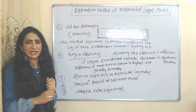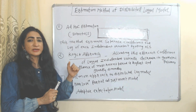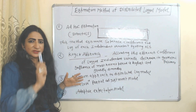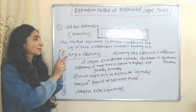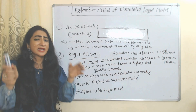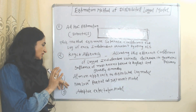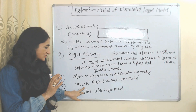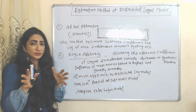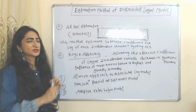Now we will see estimation methods for the distributed lag model. First is ad hoc estimation, which estimates separate coefficients for the lag of each independent variable using OLS. Next is the Koyck approach, which assumes the coefficients of the lags decrease in a geometric pattern, meaning the most recent independent variable has the highest influence. The Almond approach is another method. The Nerlove partial adjustment model is based on a stock adjustment principle, and the adaptive expectations model is also an important estimation method.